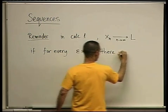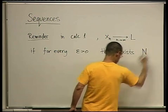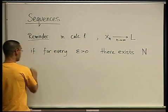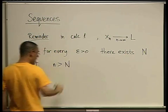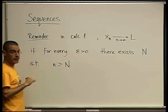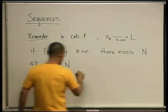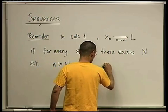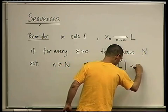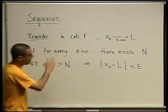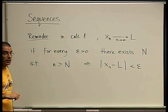there exists some number N, such that whenever the index exceeds N, one of my favorite things in mathematics, big N, small n bigger than big N, such that if n is greater than N, that implies that xn and L, the distance between them is less than epsilon. Does everybody remember this definition of convergence?